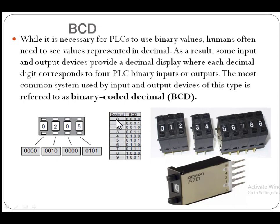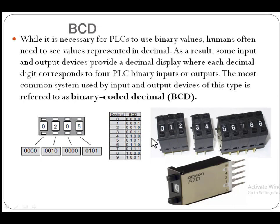Binary Coded Decimals (BCD): we often need numbers in binary coded form. For example, decimal digits 0, 1, 2, 3, 4, 5 and so on are converted to binary coded decimals as follows — 0 is 0000, 1 is 0001, 2 is 0010, 3 is 0011, and so on. Some switches have numbers in binary coded decimal form and some in decimal form. For example, 5 is equivalent to its BCD code, and 2 is equivalent to its BCD code.